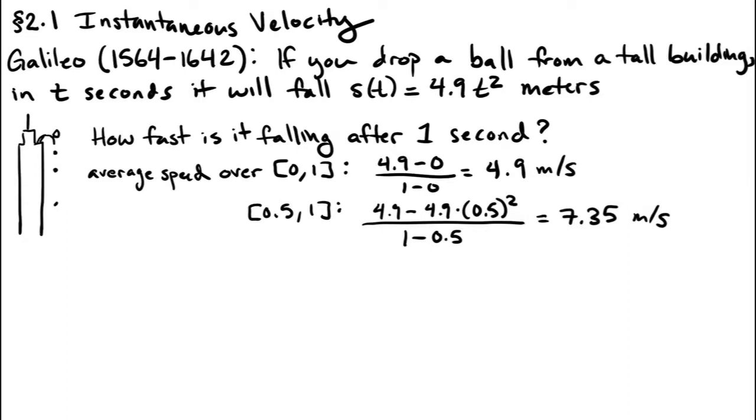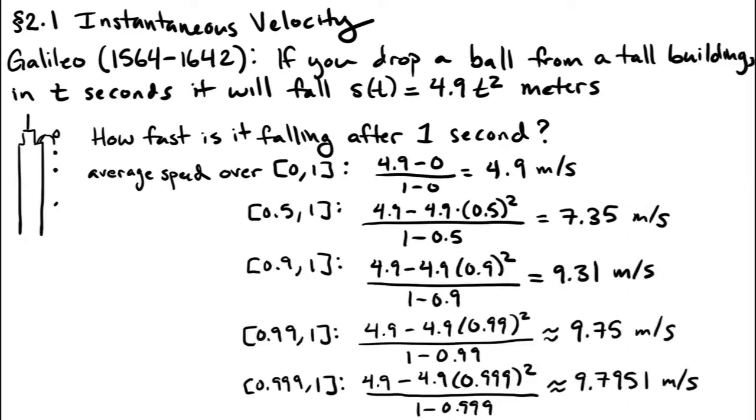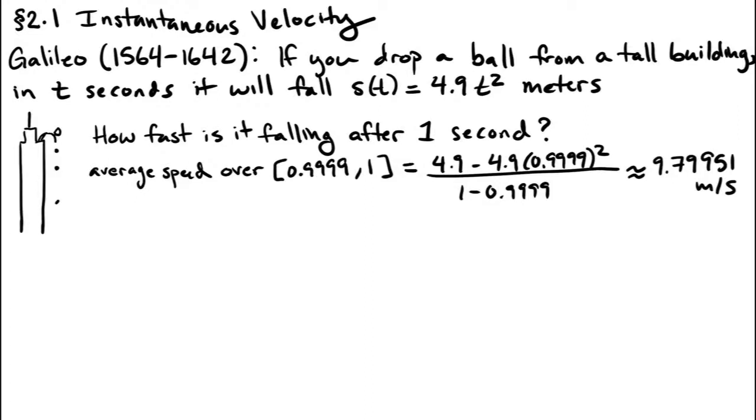How about an even smaller interval? As the interval gets smaller and smaller near 1, the value starts to stabilize. We can see now it's sort of 9 point something big: 9.7, 9.8, something like that.